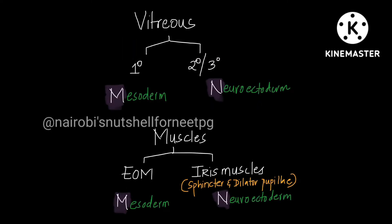Next is vitreous. Vitreous has primary, secondary, and tertiary stages of development. Primary vitreous forms first, then secondary and tertiary. M comes before N alphabetically, so place M first then N: primary vitreous is from mesoderm, and secondary and tertiary vitreous are from neuroectoderm. Do not confuse this N with neural crest cells — remember it as meso and neuro rhyming together, similar to the sclera slide where nasal and neural rhymed.